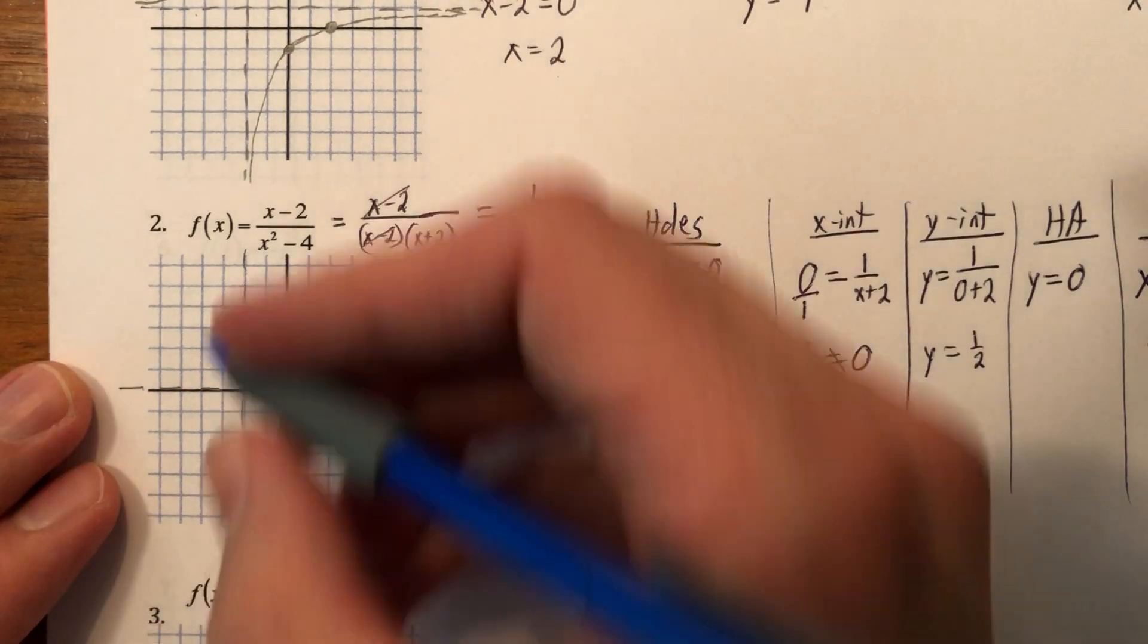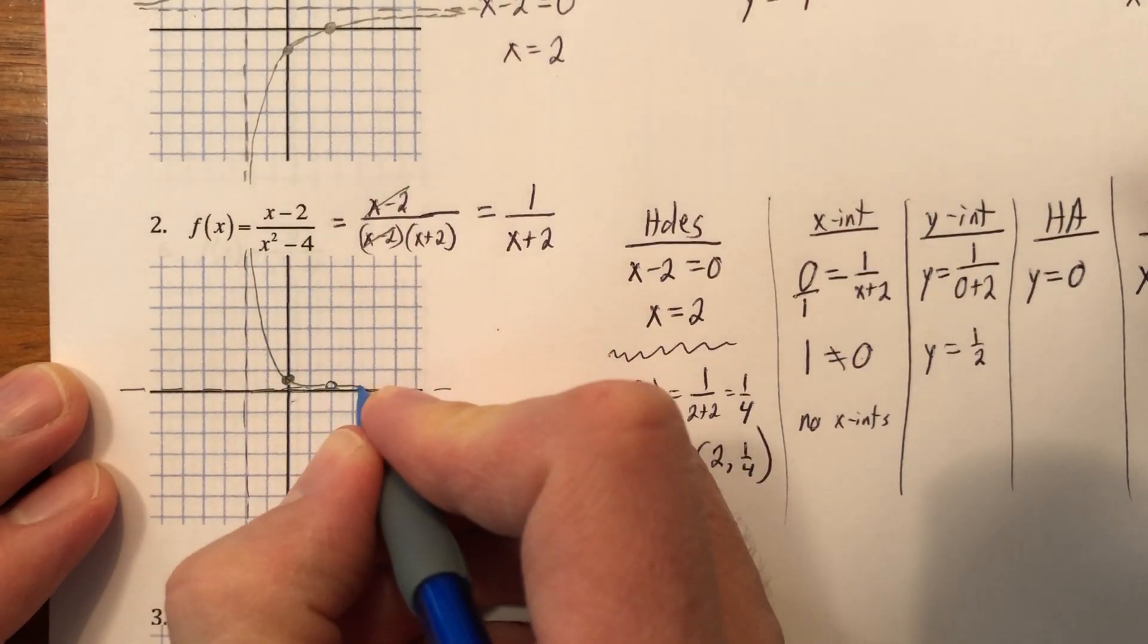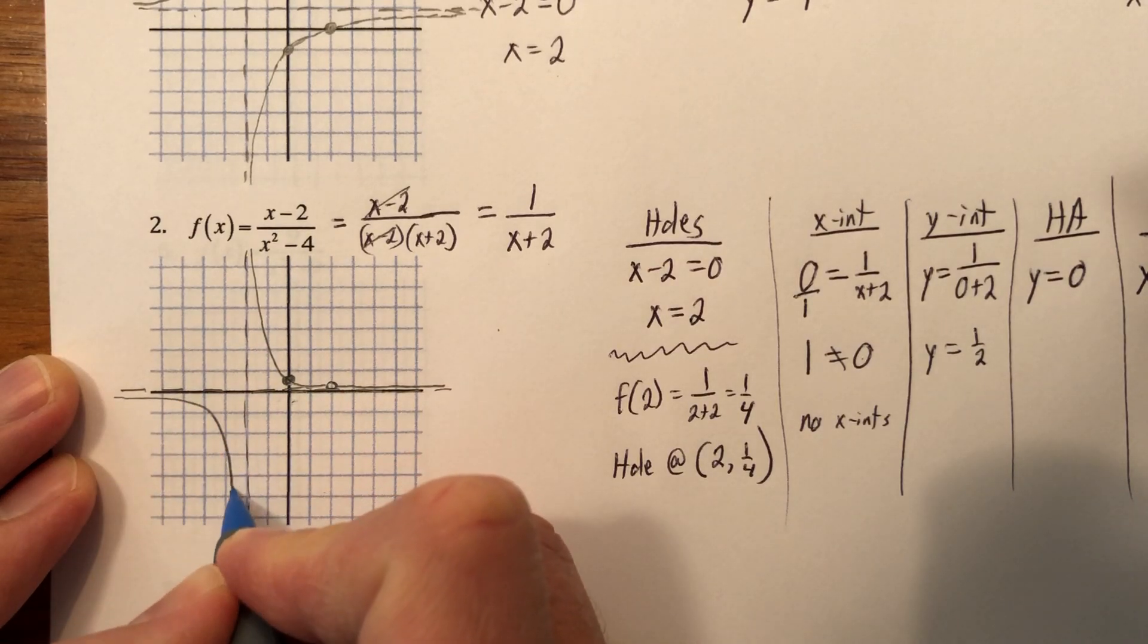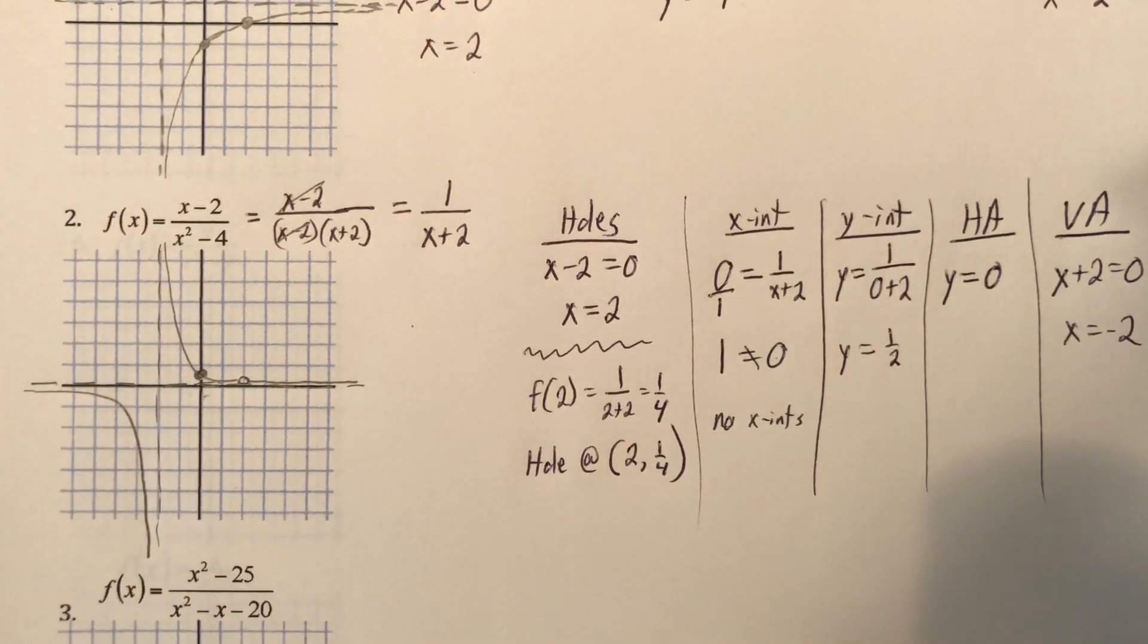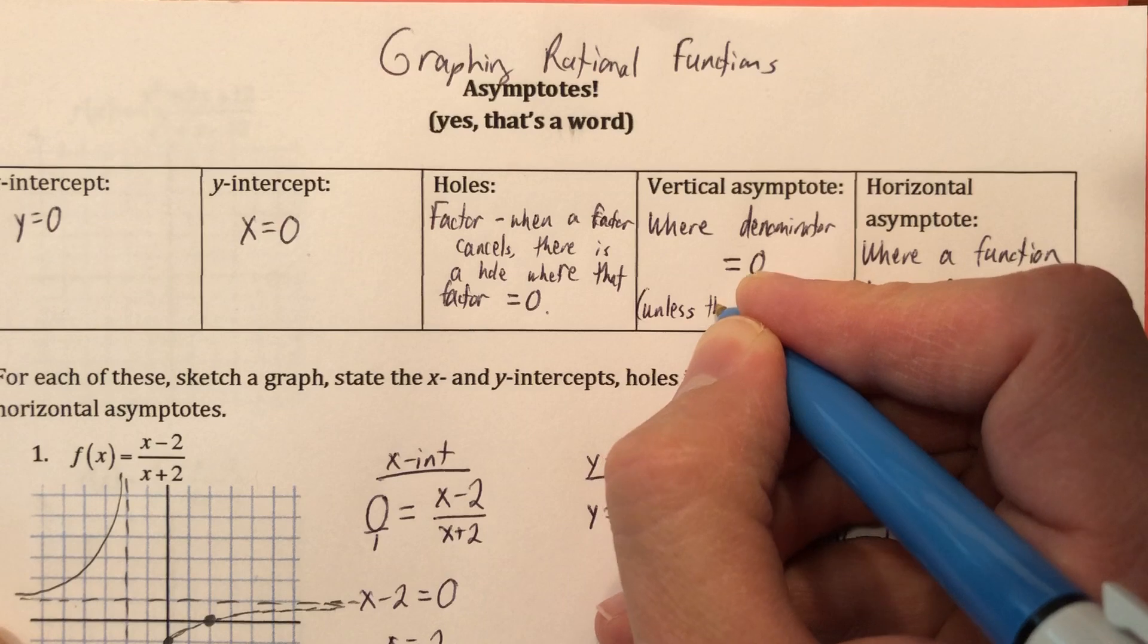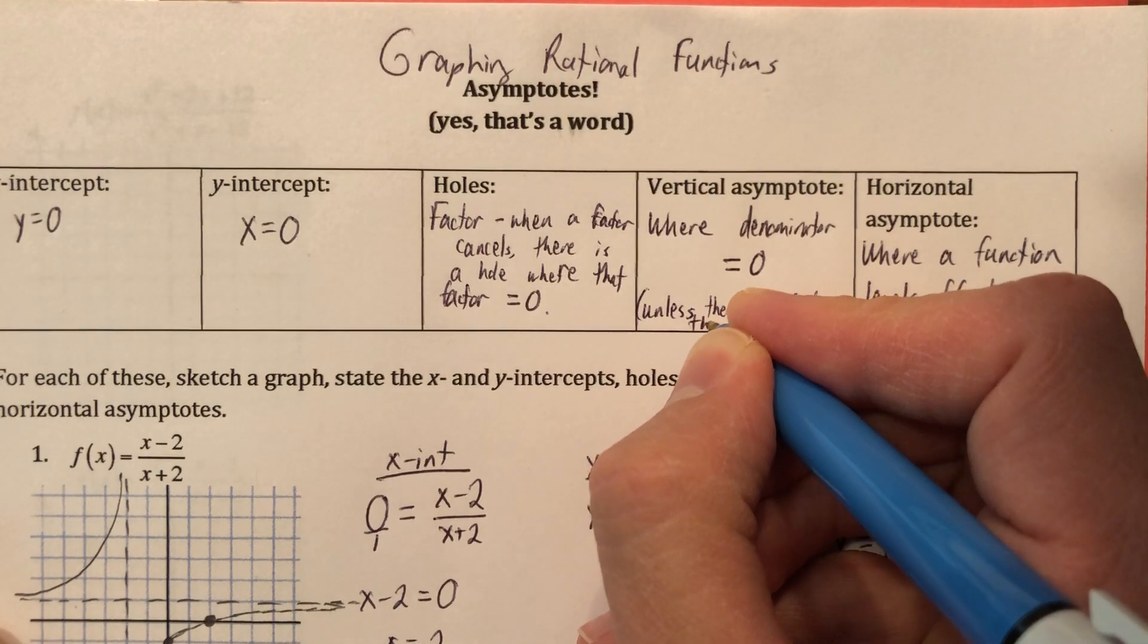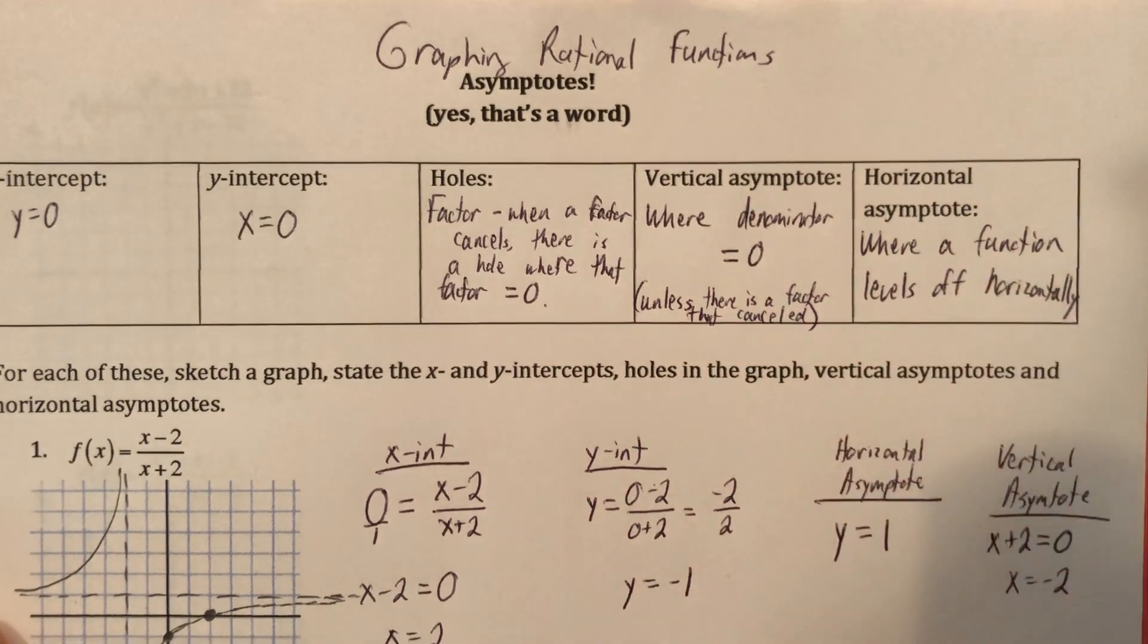And this is what my graph is going to look like. It's going to come down this way and does this. And it skips that little guy right there and keeps on going. Never crosses that asymptote. It's going to get really close to that one as well. There it is. Isn't that neat? That's cute. That's kind of what I saw when I saw it on Desmos. So my vertical asymptote is where my denominator equals zero unless there is a factor that canceled. Then I ignore that factor.